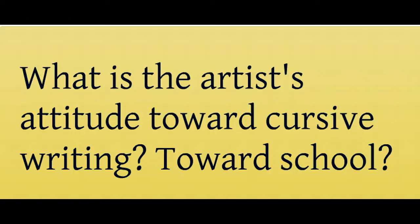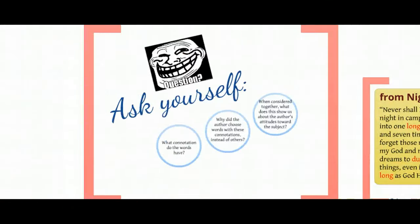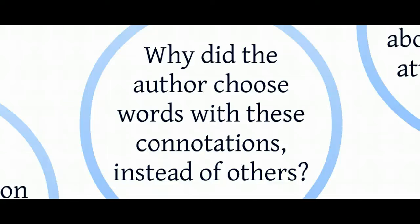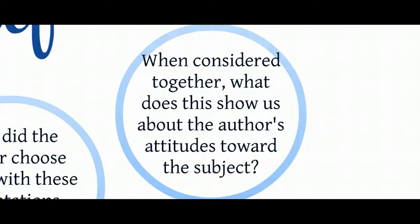If you could do that with a cartoon, you could do that with a piece of writing. All you have to do is ask yourself a few questions when reading something. First: what connotation do the words have? Pick out specific words and think about the feeling of those words. Then ask: why did the author choose words with these connotations instead of other words? In English we have a lot of words to mean similar things, so why did the author choose these particular connotations? And finally: when considered together, what does this show us about the author's attitude toward the subject? If you ask yourself those three questions, you will be able to come up with what the tone is.